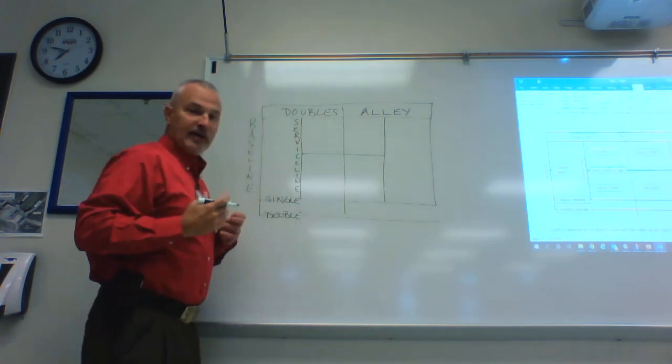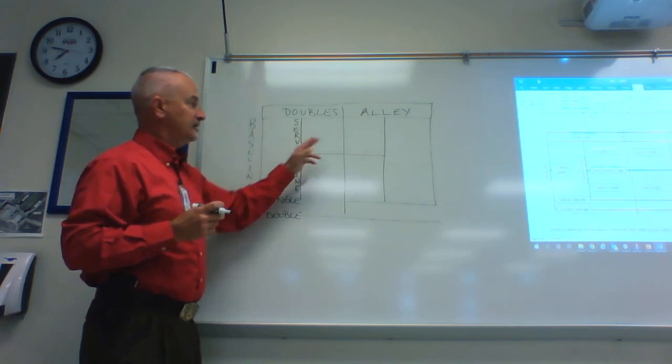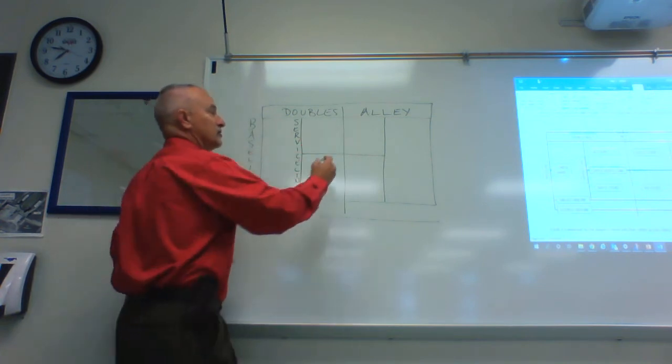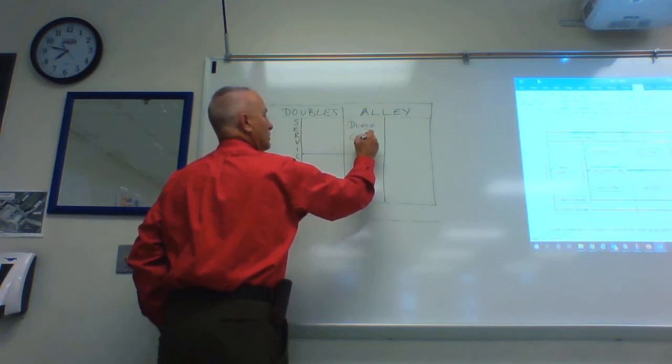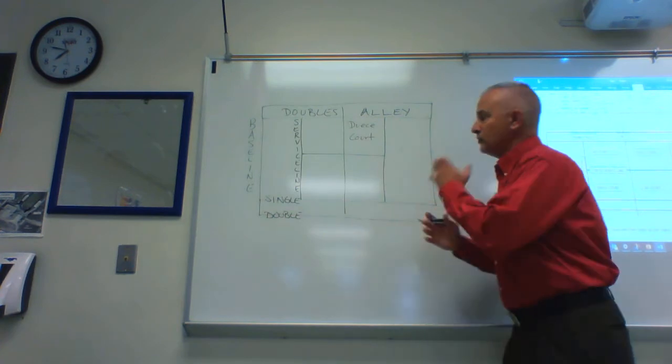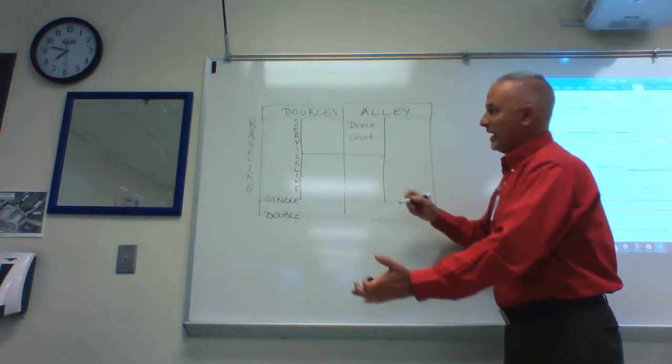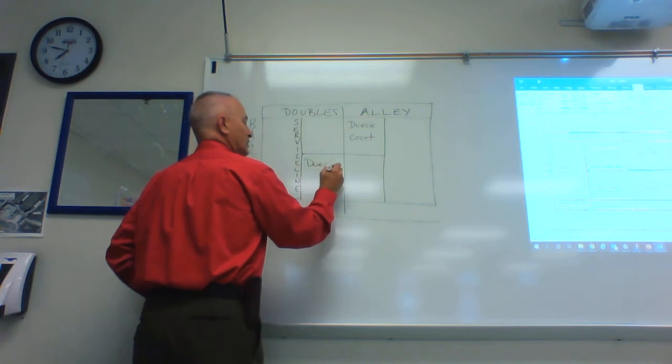When you are serving from this side of the court, you always start serving to the left side of your opponent. This area is called the deuce court. Now, if your opponent's serving to you, again, they're serving to the left side. And so the deuce court on your side would be here.